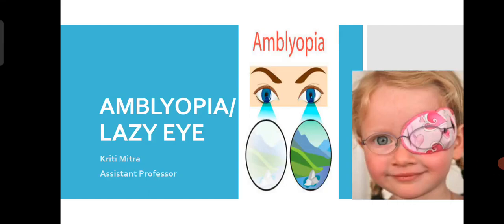Today I will talk about Amblyopia, also known as lazy eye. A lazy eye develops when the child does not get correct visual stimulation in the weaker eye. If one eye is weaker than the other, that eye's images are not taken by the brain, and thus the eye becomes suppressed and later on it develops Amblyopia.